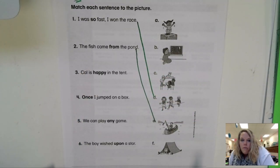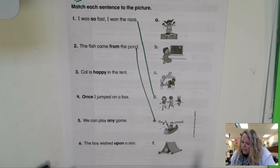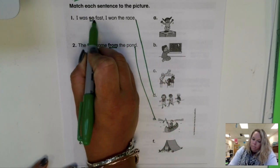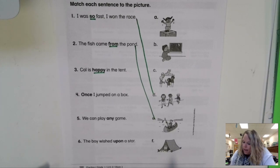Okay, number three. Cal is happy in the tent. See, these are our high frequency words. They're bolded. Cal is happy in the tent.